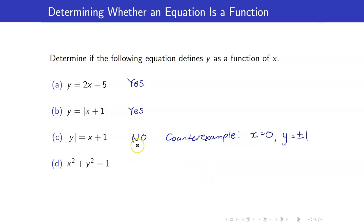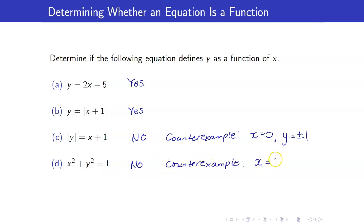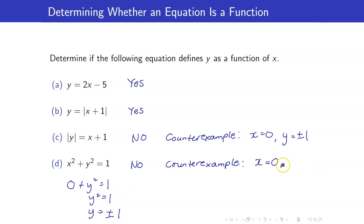For x squared plus y squared equals 1, the answer is no — it is not a function. A counter example: when x equals 0, we have 0 plus y squared equals 1, so y squared equals 1, hence y equals plus or minus 1. You would have two values for y, plus or minus 1.